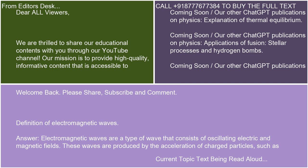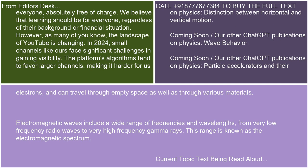Electromagnetic waves are a type of wave that consists of oscillating electric and magnetic fields. These waves are produced by the acceleration of charged particles, such as electrons, and can travel through empty space as well as through various materials.